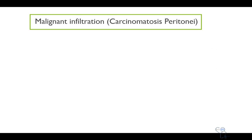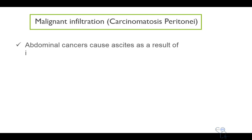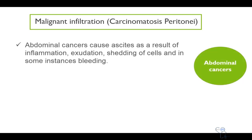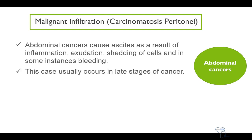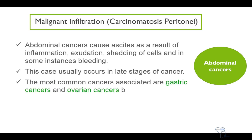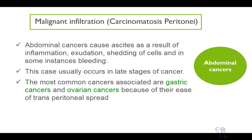Another cause of ascites is carcinomatosis peritonei, or malignant infiltration. Abdominal cancers cause ascites as a result of inflammation, exudation, shedding of cells, and in some instances, bleeding. This usually occurs in late stages of cancer, and the most common cancers associated are gastric cancers and ovarian cancers, because of their ease of transperitoneal spread.